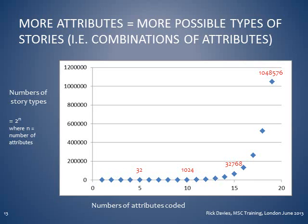With five different attributes there could be 32 different kinds of stories. With 10 attributes, over a thousand. With 15, we are up to 32,000. With 20, we are up to over a million. So while card sorting methods work for finding clusters with small numbers of cases, when dealing with large numbers of stories and many different attributes, it is beyond the possibilities of participatory methods, and we need to look at other methods of analyzing stories.